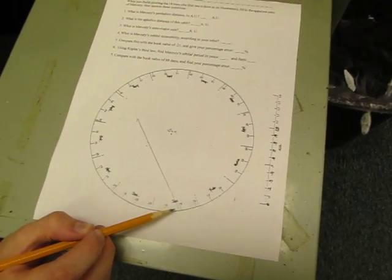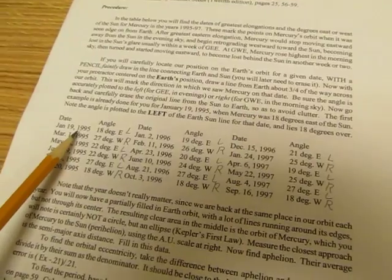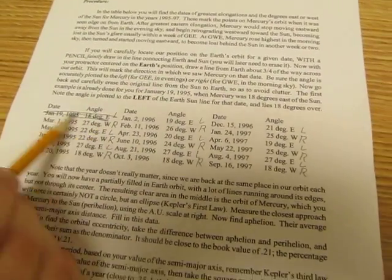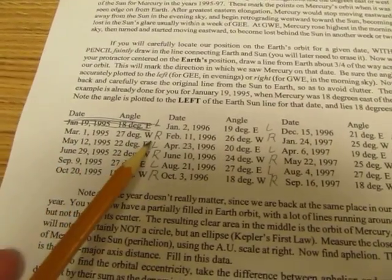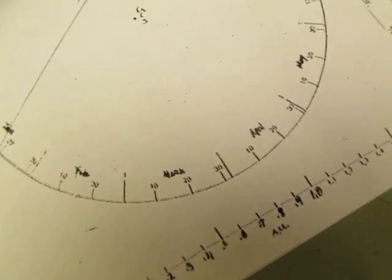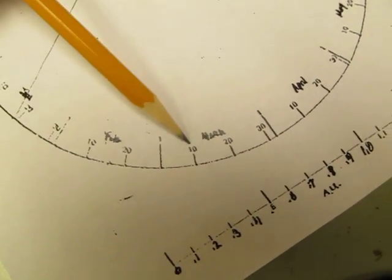Now we've done January the 19th so go back up to your data sheet and mark through January 19th. That one has been done for you as the example. The next one, notice your data, is May the 1st. So on May the 1st, mark May the 1st right here, or March the 1st, my mistake, March the 1st right there.